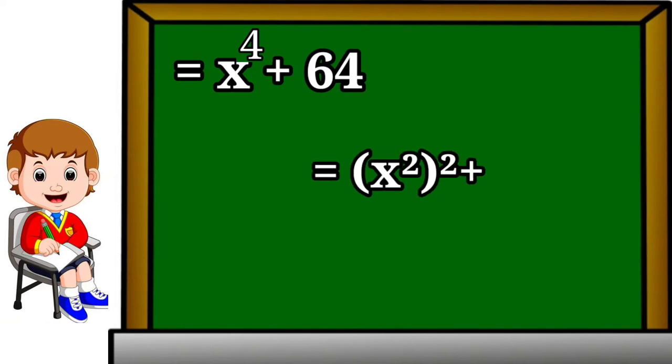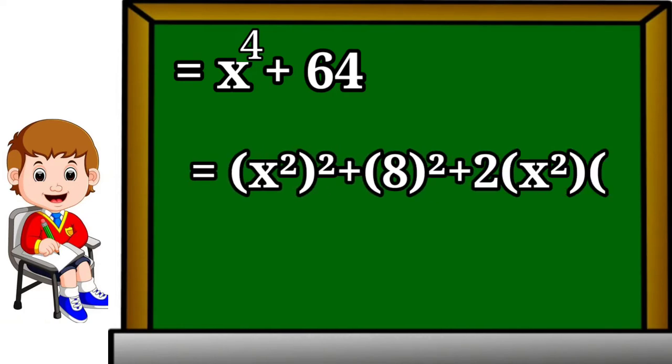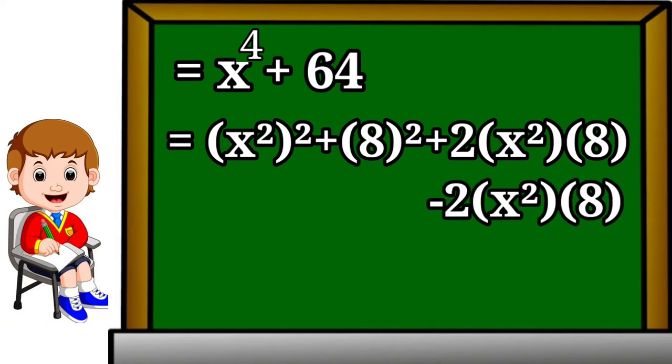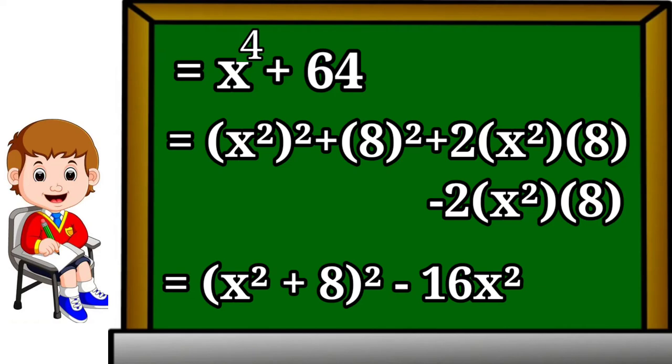It can be factorized as (x²)² + (8)² + 2(x²)(8) - 2(x²)(8). It can be written as (x² + 8)² - 16x².